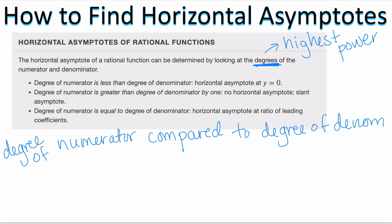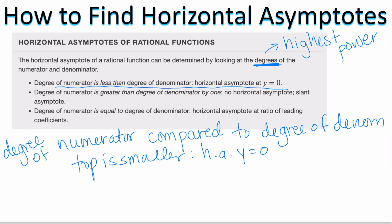If the top is smaller — if the degree of the numerator is less than the degree of the denominator — automatically the horizontal asymptote is y equals zero. So if the top is smaller, automatically the horizontal asymptote is y equals zero. That's one of the things that can happen.